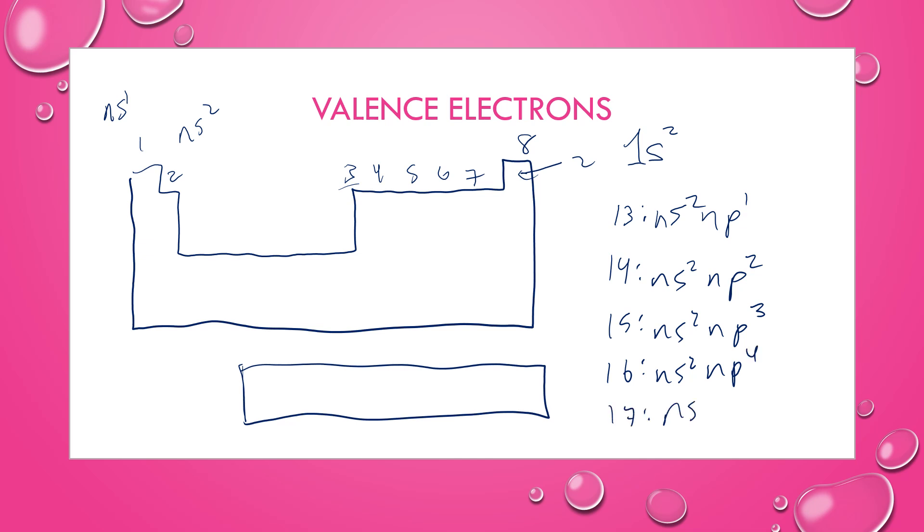17 would be NS2, NP5. And 18, with the exception of helium, is NS2, NP6. That P sublevel is full now with six electrons, which is what makes the noble gases so stable. Make sure that you're able to figure out the number of valence electrons for all representative elements and be able to write the outermost electron configuration following this pattern.